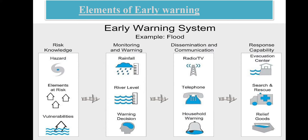The next topic is elements of early warning. For the flood early warning system, first is risk knowledge: we need to know the hazard, elements at risk, and vulnerability. Next is continuously monitoring and giving warnings for rainfall, river level rise, and warning decisions.